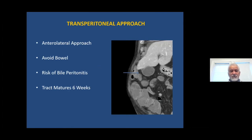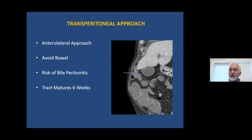In the transperitoneal approach, it is very important to remember that you're not going to go through the loops of bowel. The transperitoneal approach is actually under ultrasound control, and sometimes you may not be able to visualize clearly a collapsed loop of bowel. Therefore, you want to make every effort to make sure that there is no interposition of a bowel loop in the tract of the catheter — from the skin, subcutaneous tissue, through the muscle layer, and then into the gallbladder.